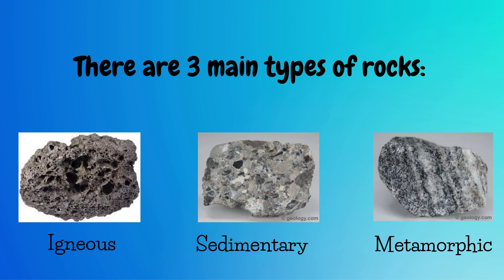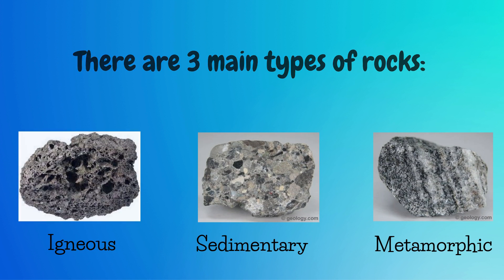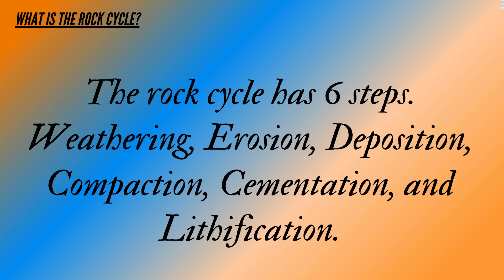There are three main types of rocks: igneous, sedimentary, and metamorphic rocks. The rock cycle has six steps: weathering, erosion, deposition, compaction, cementation, and lithification.